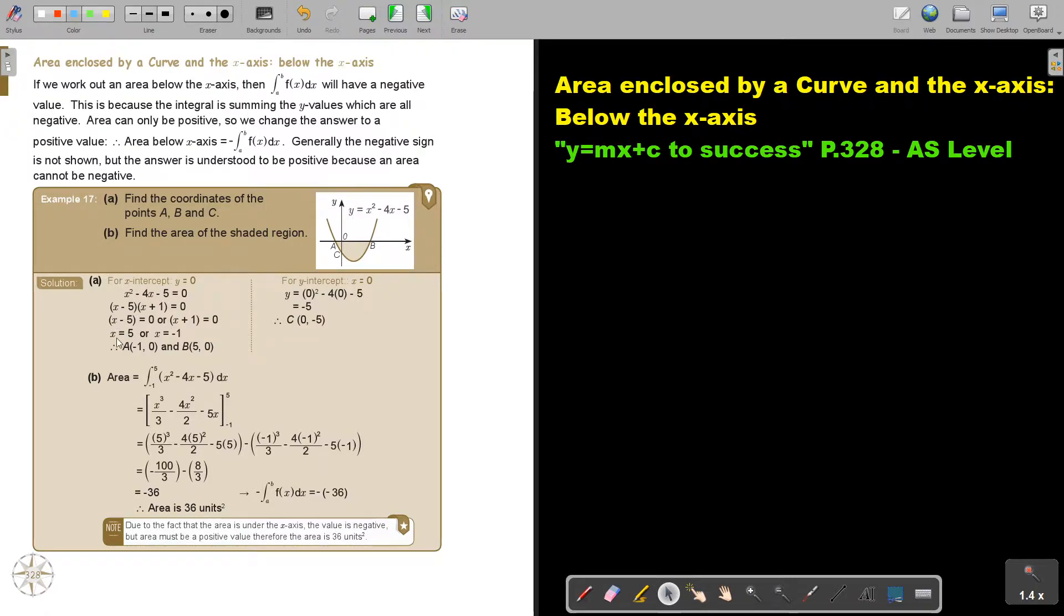And then you factorize and it's cutting the x-axis at, let's just put it in the sketch, it's cutting there at negative one and it's cutting at five. And if you want to see where it cuts the y-axis, then you just put in the place of x zero and that will be negative five.